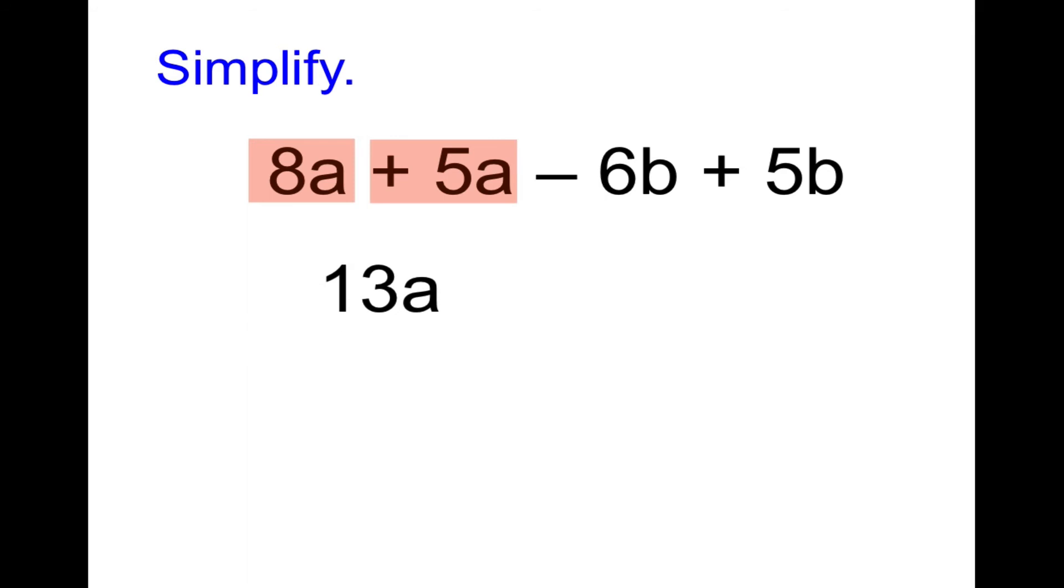We have 8a and positive 5a, that's 13a. Then we have negative 6b, positive 5b, positive and a negative. So we're going to subtract and take the sign of the larger, negative b. If you wrote negative 1b, I'm not surprised, that's fine, but this is our preferred answer. When the coefficient is 1, we generally do not write it.